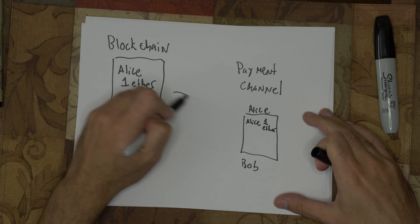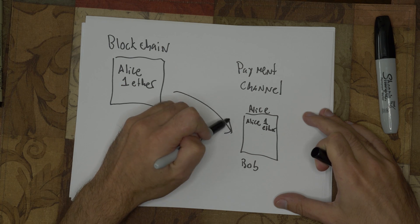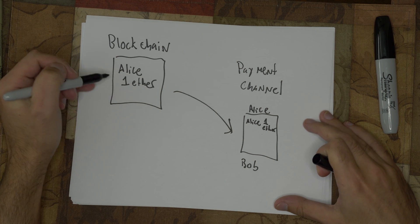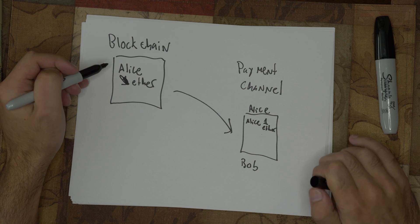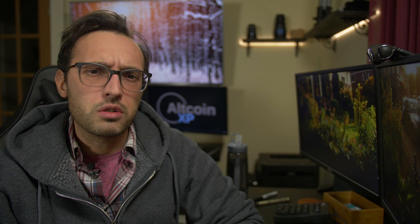Throughout this video I'm going to use Ethereum as an example, but payment channels can work with other blockchains too, such as Bitcoin and Litecoin. The basic explanation is that payment channels take Ether off of the blockchain and place it in a payment channel between two parties.